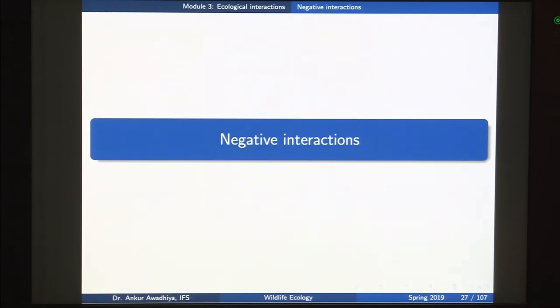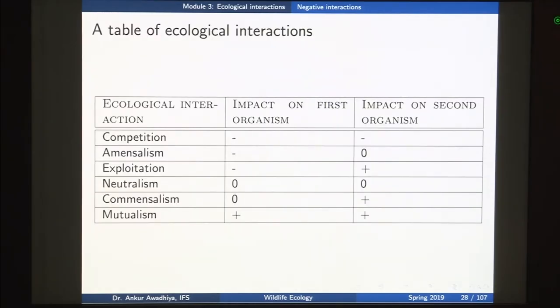Namaste. Today we will move forward our discussion on ecological interactions and look at negative interactions. Before we begin, let us summarize what we had learned in the previous lecture. We had looked at six different kinds of ecological interactions. The first is competition. In the case of competition, the first organism is harmed and the second organism is also harmed. So this is a negative interaction and we will explore it in greater detail today.